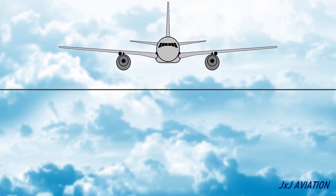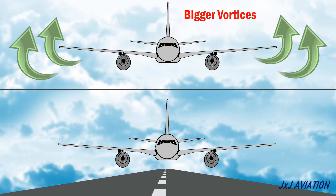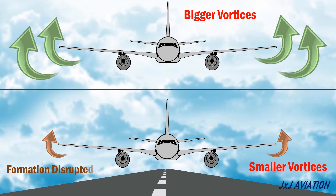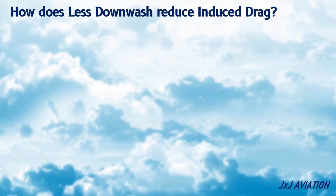Now let's compare an aircraft flying at its cruise altitude and the same aircraft flying near the ground. The wing tip vortices are bigger when the aircraft is flying at high altitudes, but the wing tip vortices become smaller when the aircraft is near the ground. This is because the ground disrupts the formation of wing tip vortices, causing less downwash on the wing. Less downwash means less induced drag on the aircraft.